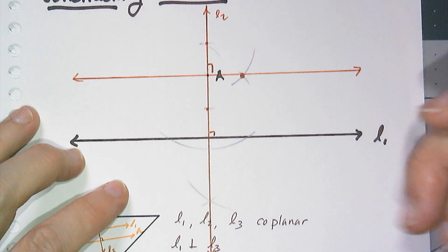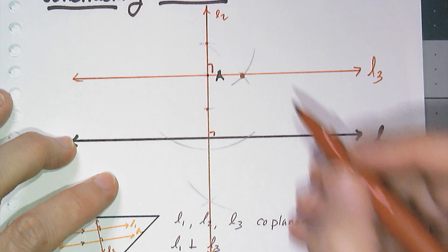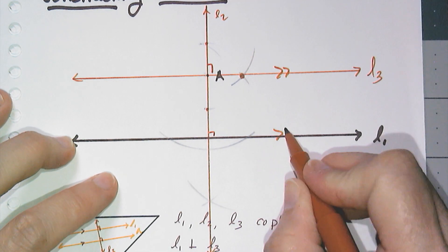So I have two lines perpendicular to the same line. They're all coplanar, which means line one is parallel to line three.